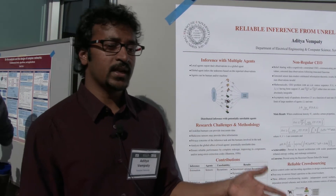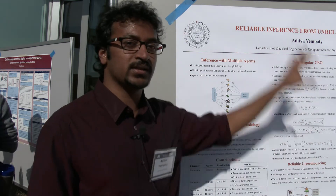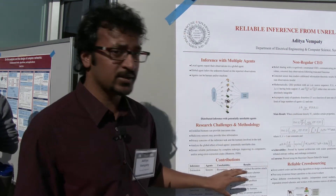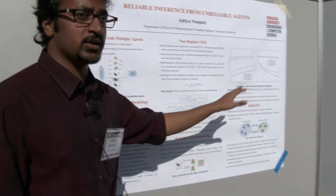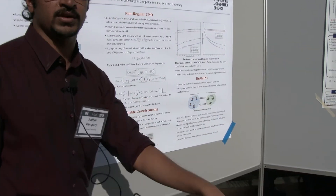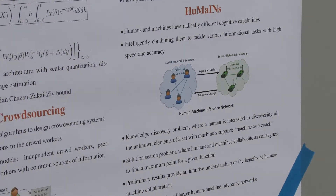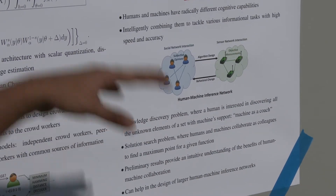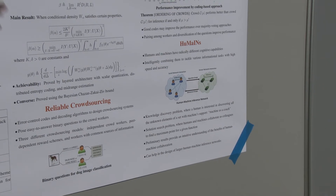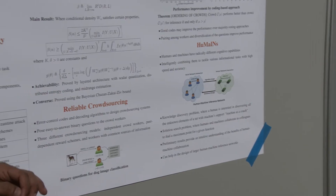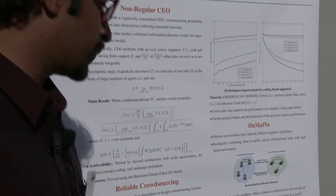Moving forward, what we want to do is look at systems with humans and machines together. We have some results where there are only humans and others where there are only sensors. But moving forward, we want to look at what are called human-machine inference networks, where humans and machines work together to do inference. This is related to understanding the fact that humans and machines have radically different strengths and weaknesses, and you have to capture these strengths in order to have improved performance and tasks that are much more accurate and quick.